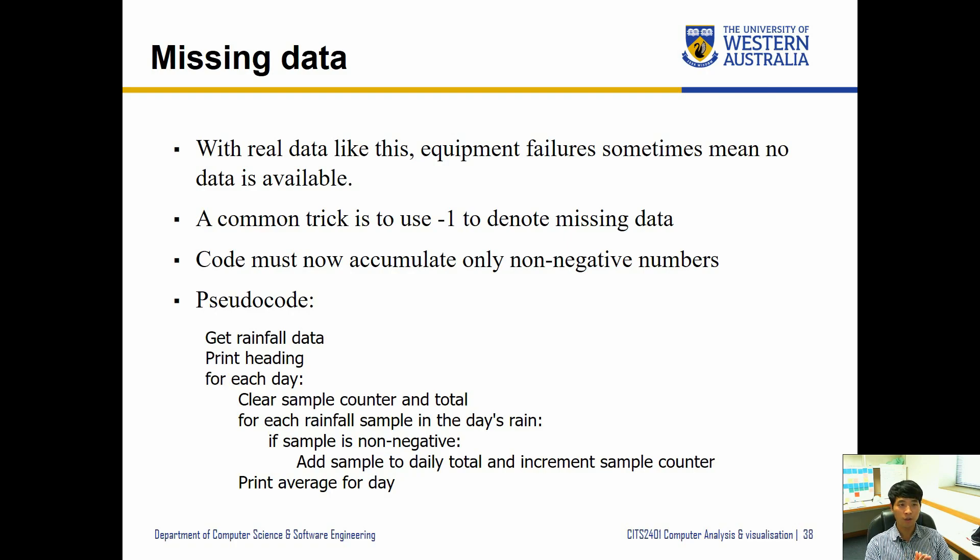So a common trick is to use a negative one to denote missing data. For example, the rainfall measurements cannot be less than zero, so negative one can be used. But if we are measuring data for some values that can go negative like temperature, then negative one may not be a good value.